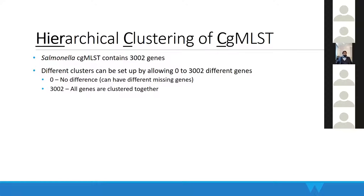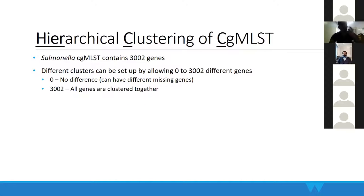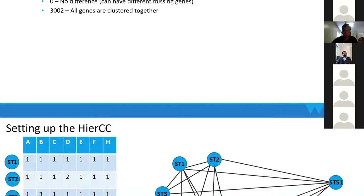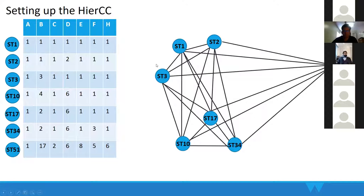With cgMLST developed, we realized a problem: it gives too much resolution, so we need a scheme to cluster cgMLST results. For example, in Salmonella cgMLST with 3,000 genes, we need a clustering method that lets you go to different levels — grouping genomes that differ by 100 genes, 1,000 genes, or 2,000 genes. We decided to go with single-linkage clustering.